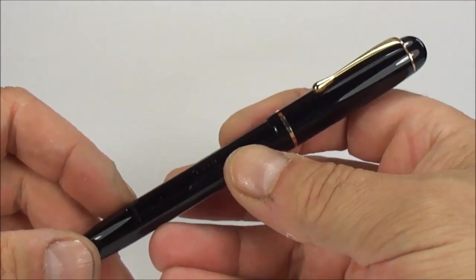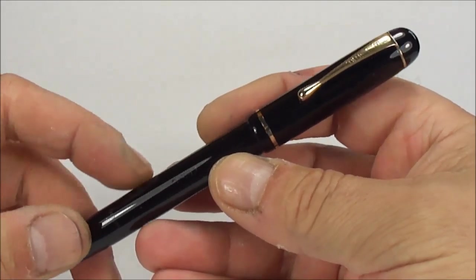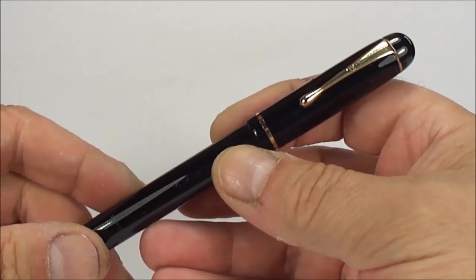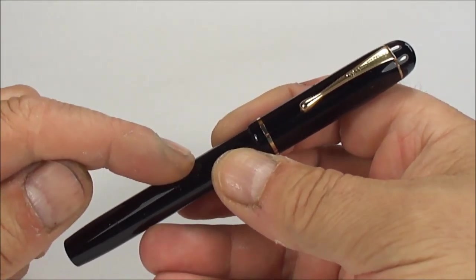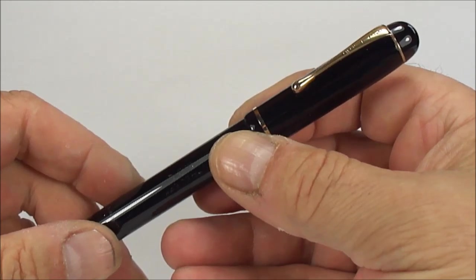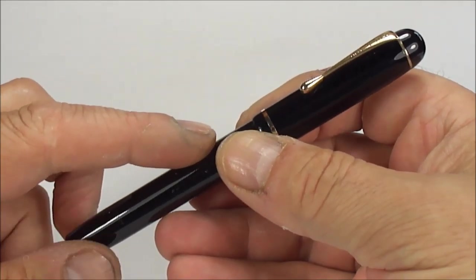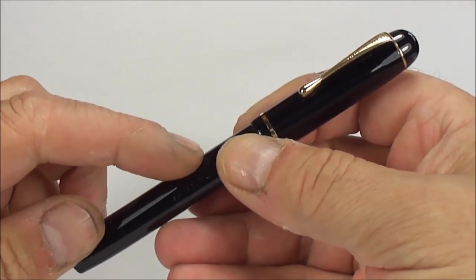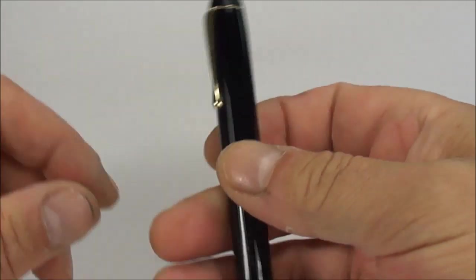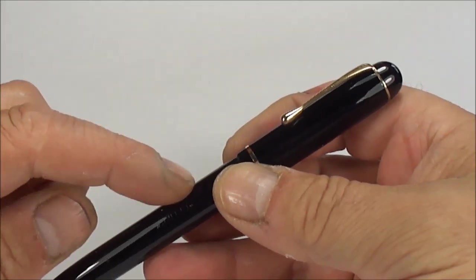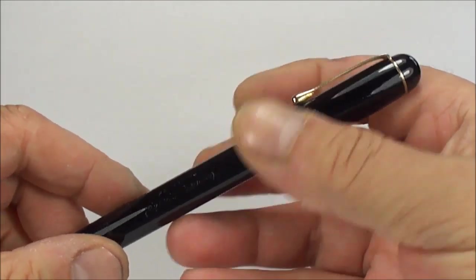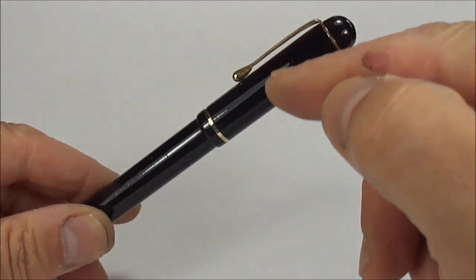When they brought out these Relief models, there were numerous different models. This particular one is the No. 2-L. The L stands for this being a lever-fill fountain pen. They also brought out a Relief No. 2-S, which was a stud filler or button filler, and an L2R, which they termed as a regular but was actually an eyedropper fountain pen.